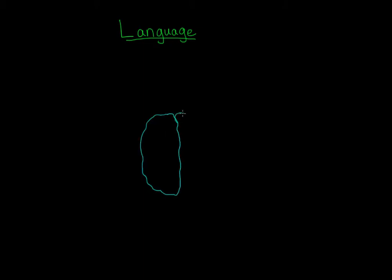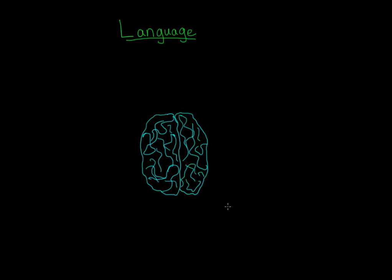First, let's go over some basic neuroanatomy. For about 90% of right-handed people, language functions are centralized in the left hemisphere of the brain. Lefties and ambidextrous folks are somewhat more likely to have language centralized in the right hemisphere, but still about 70% of them will have language centralized in the left hemisphere.